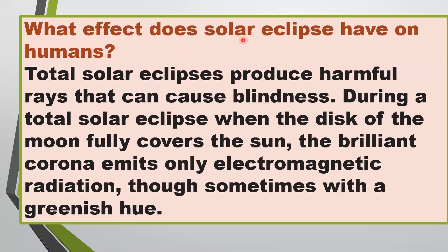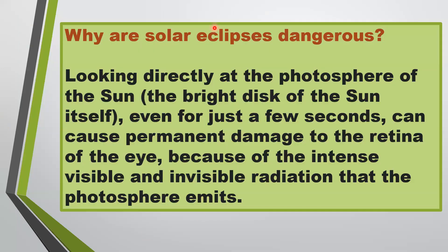Now the question arises: what effect does a solar eclipse have on humans? Total solar eclipses produce harmful rays that can cause blindness. During a total solar eclipse, when the disk of the moon fully covers the sun, the brilliant corona emits only electromagnetic radiation, though sometimes it's a greenish hue. Looking directly at the photosphere of the sun — the bright disk of the sun itself — even for just a few seconds, can cause permanent damage to the retina of the eye, because of the intense visible and invisible radiation that the photosphere emits.